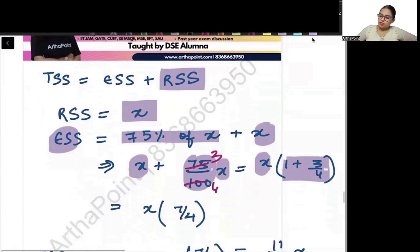So 1 plus 3 by 4, this will be X into 7 by 4. So this is the value of ESS and this is my RSS.